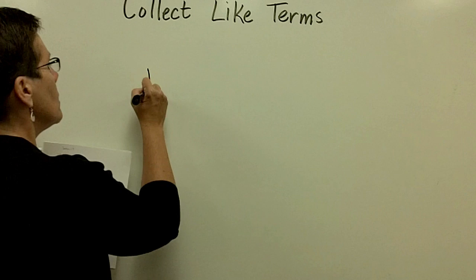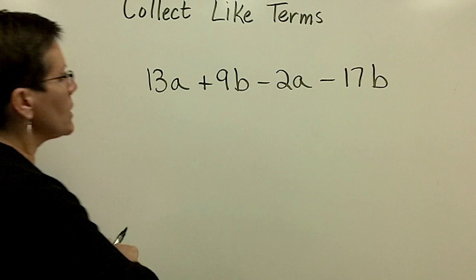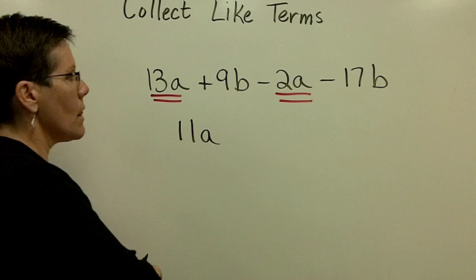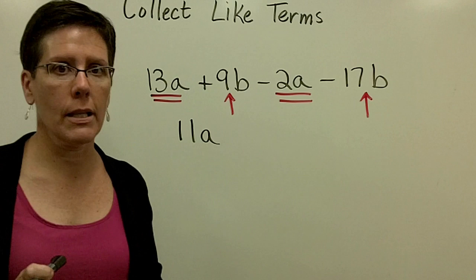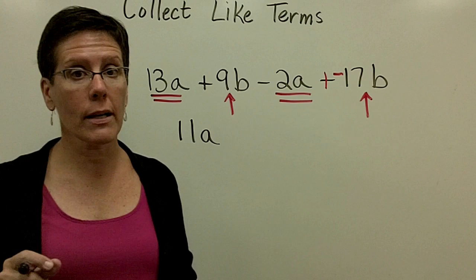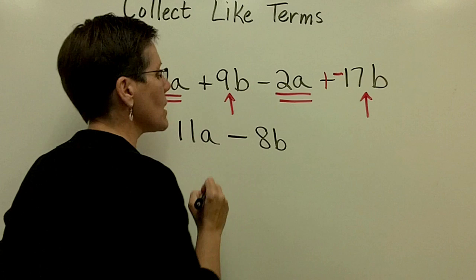So sometimes we don't put the like terms right next to one another. Here I've got 13a and I want to take away 2a because they're like terms. And 13 minus 2 is 11. Then the 9b and the 17b are like terms. But when I take a positive 9 and add a negative 17, their signs are not alike. So I have to subtract their absolute values. 17 minus 9 is 8, so I have an 8b. But this is a positive 9 and a negative 17, so the negative sign has more pull. So I'd write that as a negative 8b.